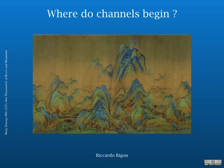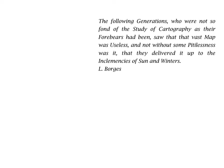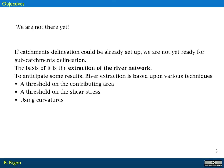Our scope is to understand where the channels begin and delineate the river networks. There is a story by Borges about a map that covers a complete region — we are not there yet with our things because we want to separate the river network pixel from the hill slope pixel.